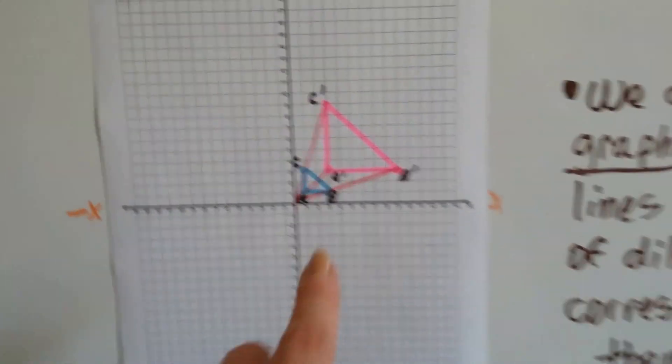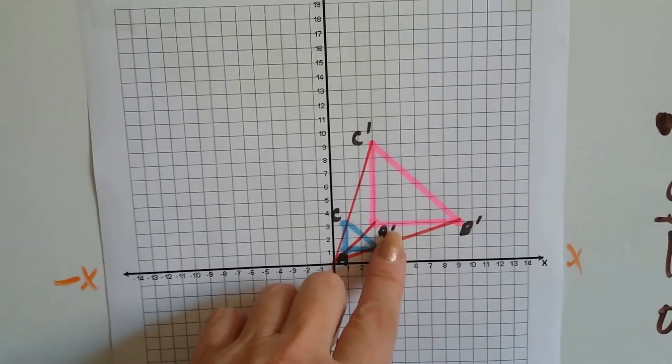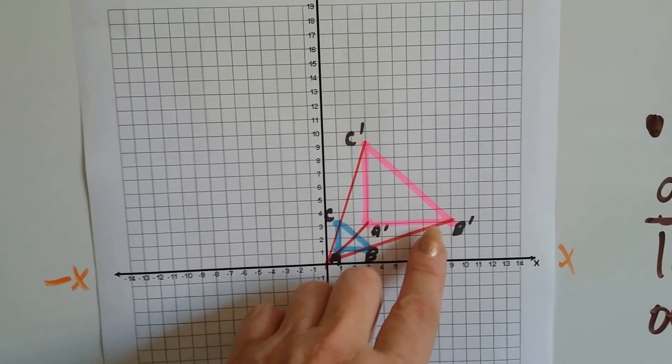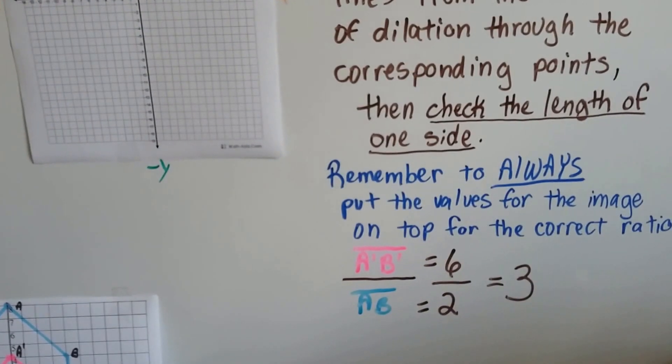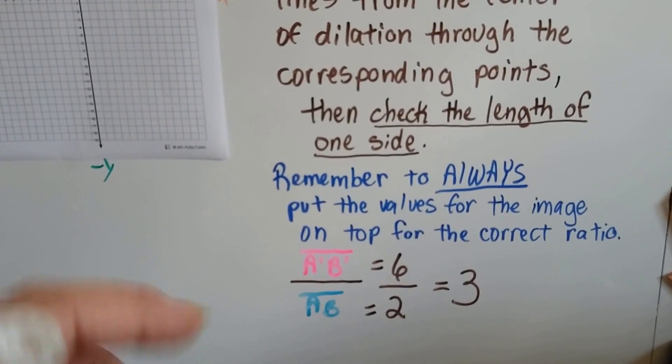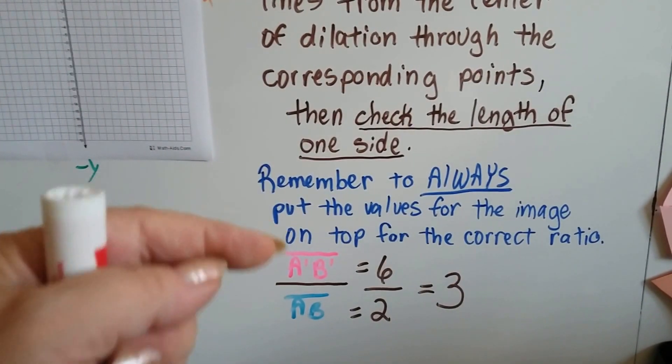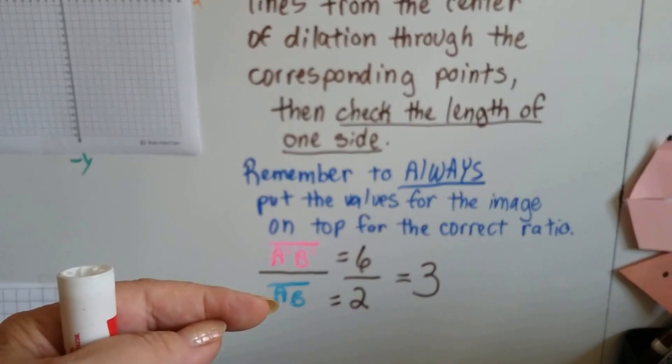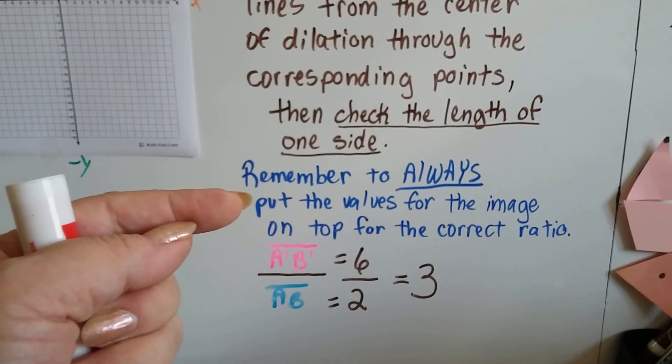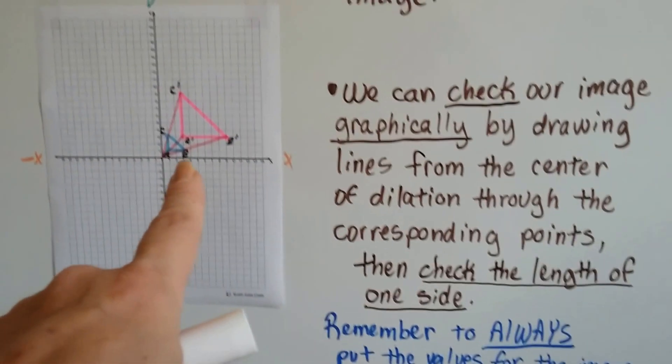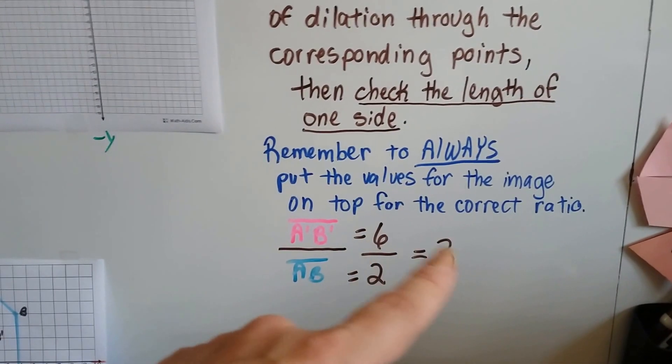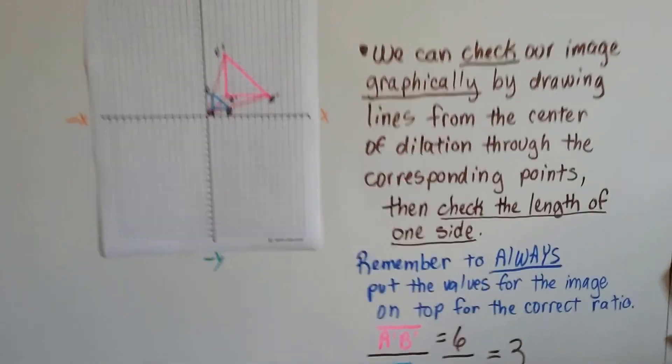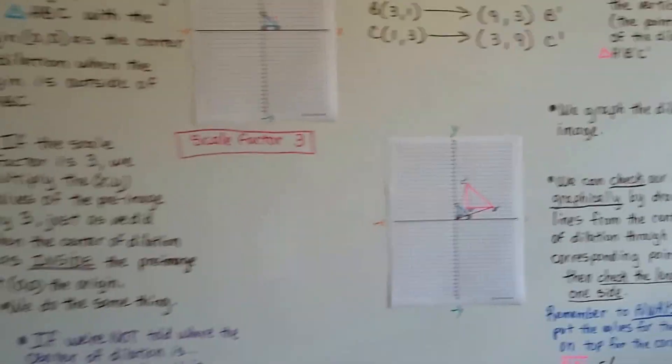We check the length of one side. What I did was I took A prime B prime and counted that it was 1, 2, 3, 4, 5, 6 units, and AB was 2 units. You always put the values for the image on top as the numerator, and the original pre-image as the denominator. That'll give you the correct ratio. Because A prime B prime was 6 units and this was 2 units, we get 6 over 2, which equals 3. That's our scale factor. We know we did it correctly.